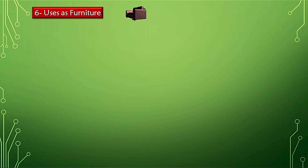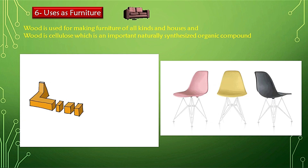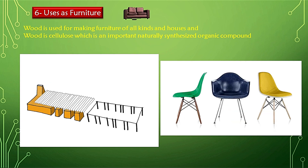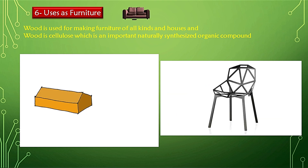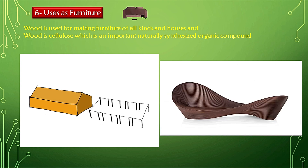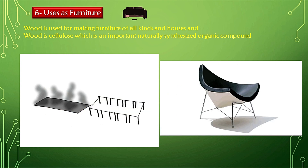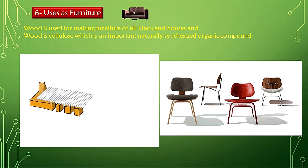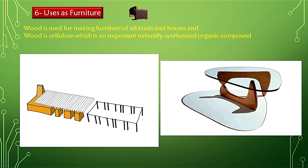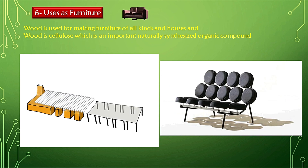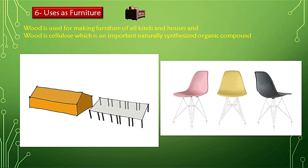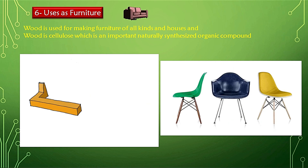Another use is furniture. Furniture made of wood is made up of an organic compound. Wood is cellulose, which is an important naturally synthesized organic compound. So all kinds of wooden furniture in our homes are actually organic compounds.